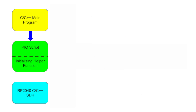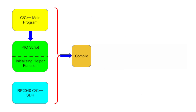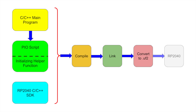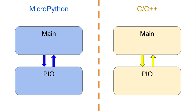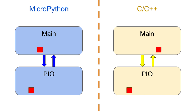But wait — there's more! We still have to compile and link our code, other programs, and the required libraries from the SDK into code that will run on the RP2040. What do we get for all our troubles? Well, the PIO program runs just as quickly regardless of whether MicroPython or C is used. However, the main program runs much faster in C, and that makes all the difference when performing high-speed data manipulation.